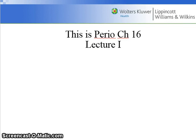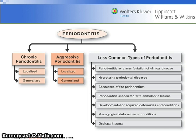Hello students, this is Perio Chapter 16, Lecture 1. Periodontitis is broken down into three categories: chronic, aggressive, and other less common types. We have already looked at chronic, which is the most common type. This chapter covers aggressive periodontitis.